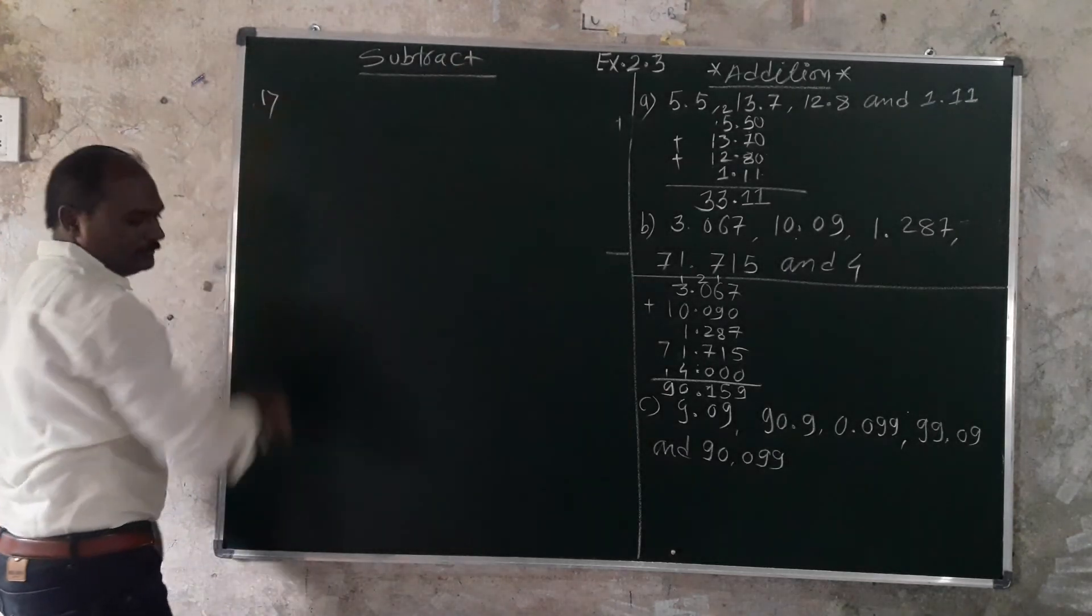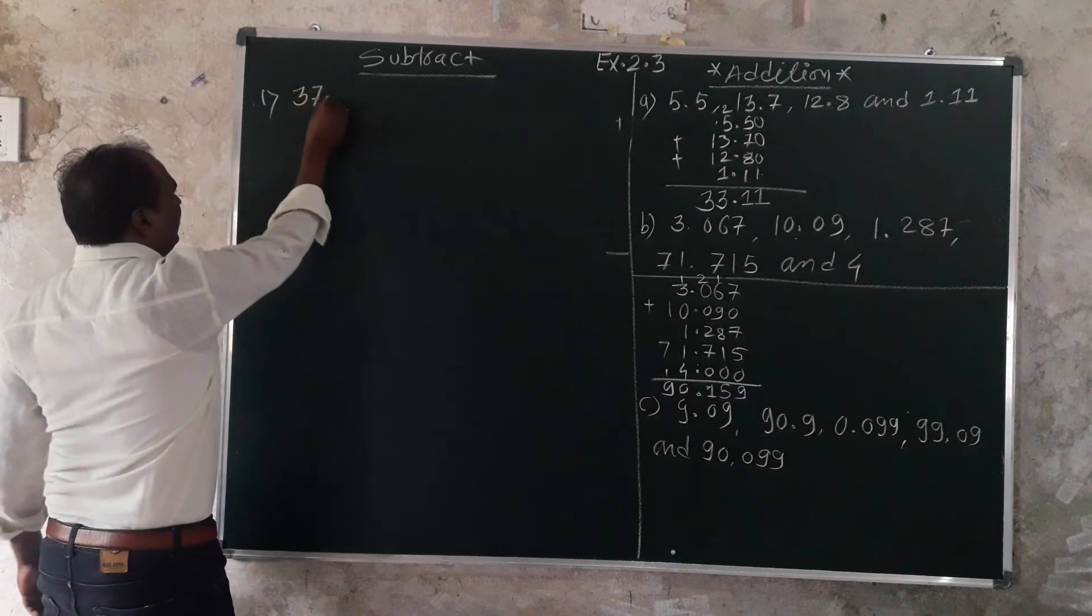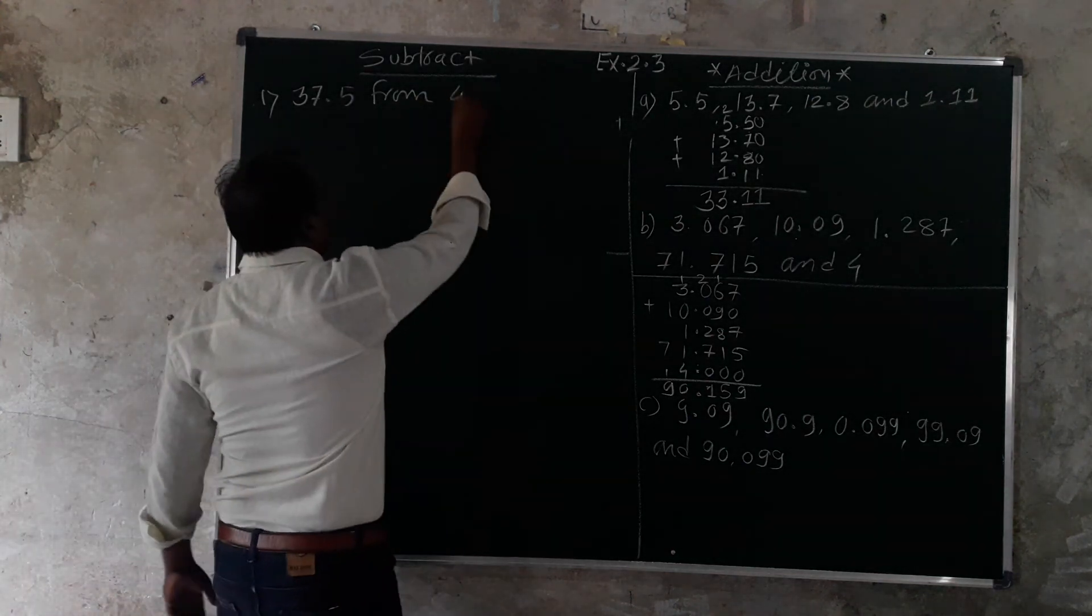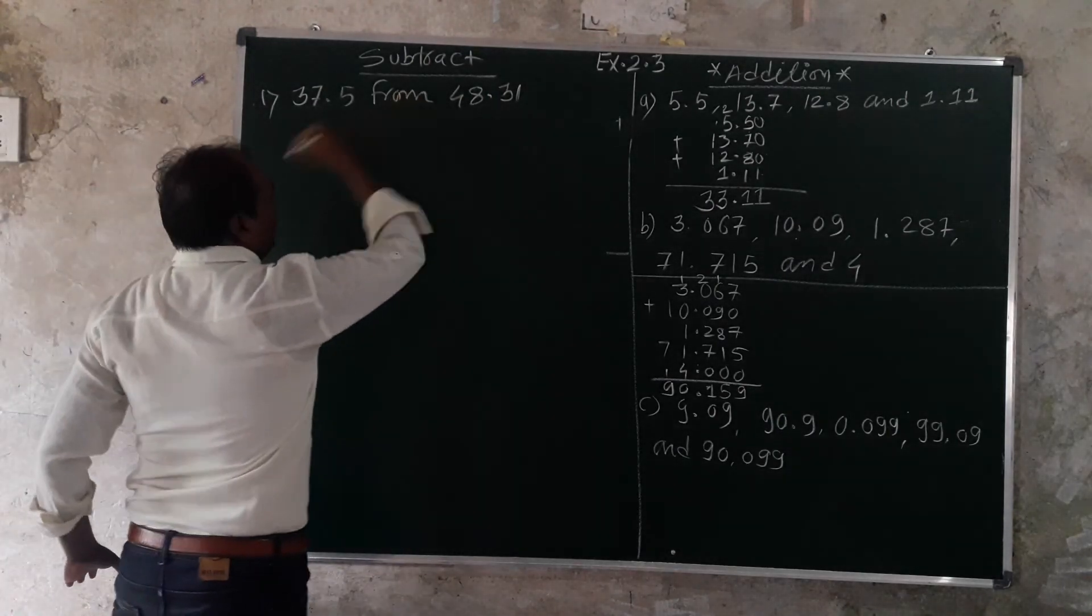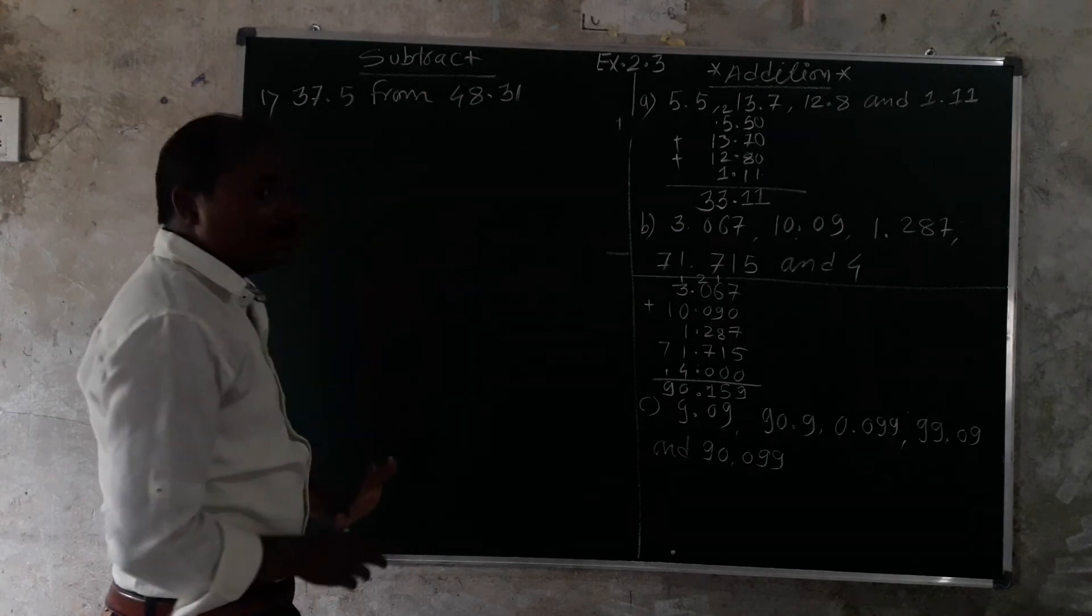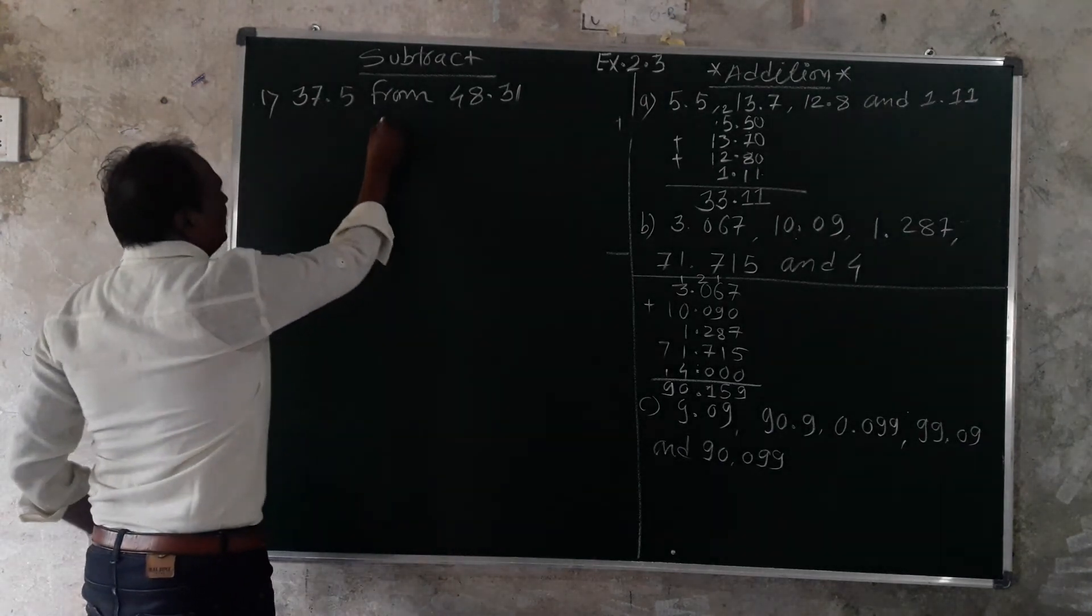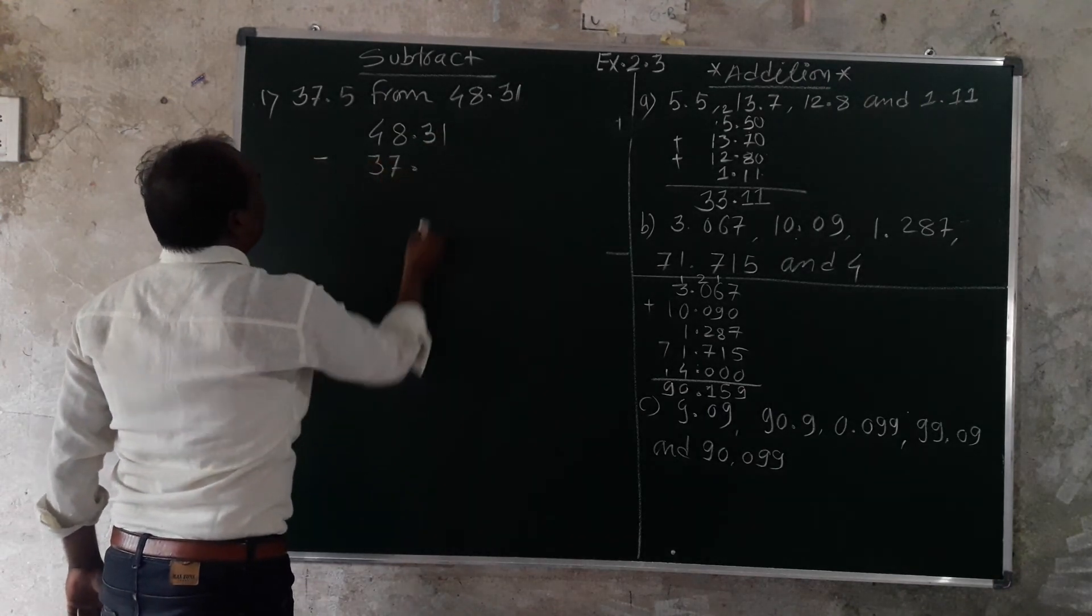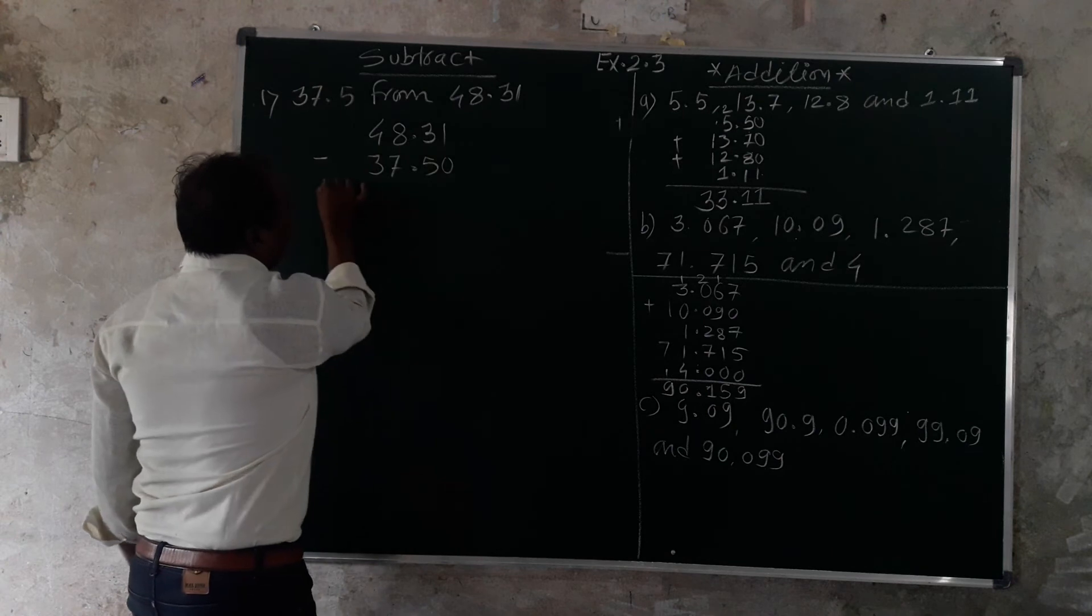Question number 1: Subtract 37.5 from 48.31. How do we understand the question? When we understand the question, we know that we write 48.31 minus 37.5. This is the same thing. You can see it. Now align the decimal points.